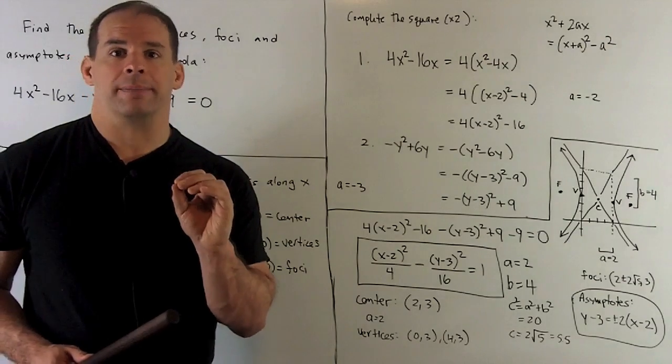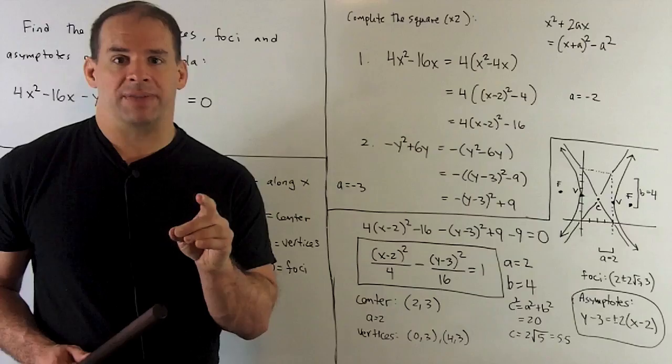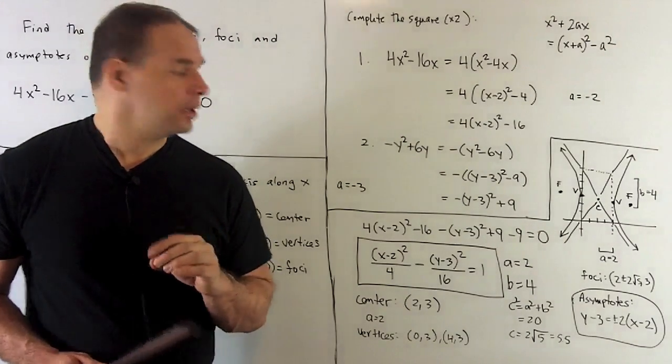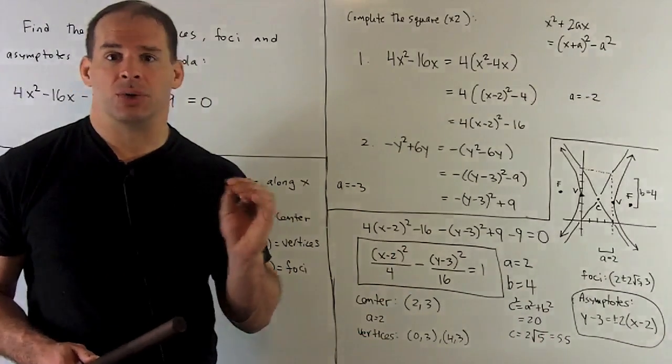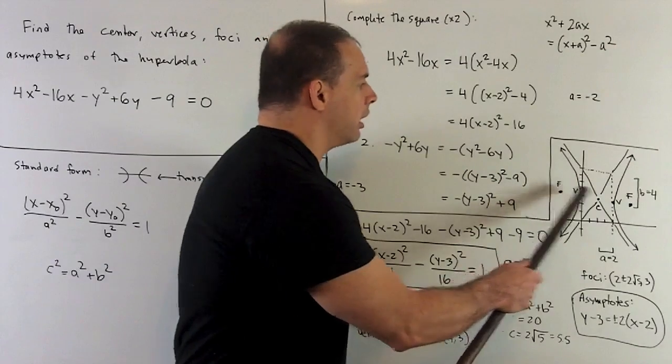Foci. We're going to take our center again, and now on the x value, we're going to add and subtract our c, which is 2√5. So that gives me foci at (2 ± 2√5, 3). These points are going to be here and here.